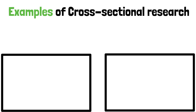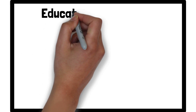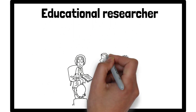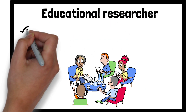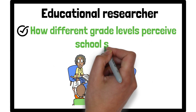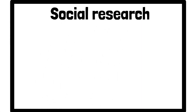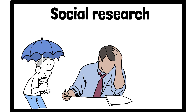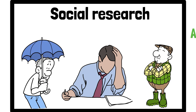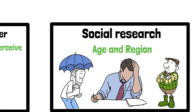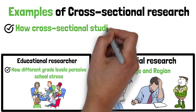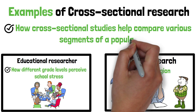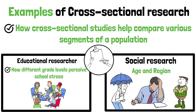Cross-sectional research is commonly used in various fields, from psychology to public health. For instance, an educational researcher could conduct a cross-sectional survey to find out how different grade levels perceive school stress. This design is also used in social research, such as understanding how opinions on climate change differ among people based on demographics like age and region. Both of these examples illustrate how cross-sectional studies help compare various segments of a population at one point in time.